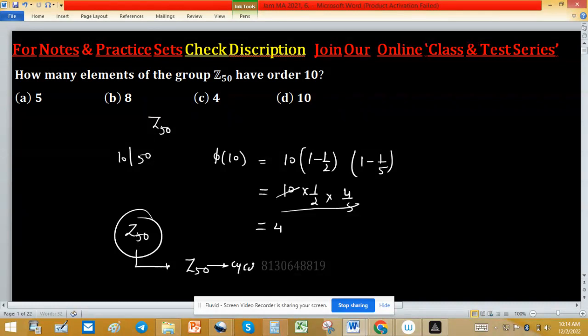Z 50 is cyclic and we know that order of subgroup divide the order of group, this is by Lagrange's theorem. If group is cyclic, then each divisor of the order of the group, each divisor of order of group will be a subgroup. For each order, there exists a subgroup of that order.